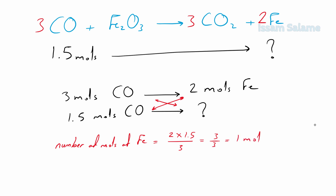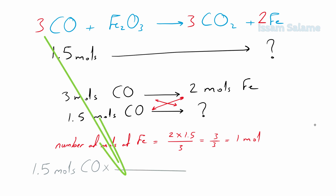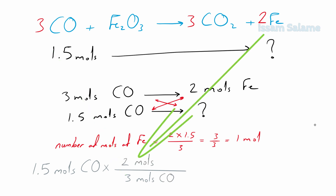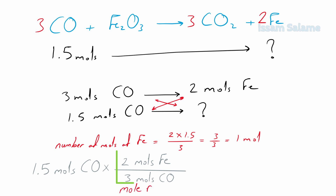The recommended way of solving is by starting with the given — 1.5 moles of carbon monoxide — multiplied by a fraction. In the denominator, put carbon monoxide with its coefficient from the balanced reaction; in the numerator, put the moles of iron with its coefficient from the balanced equation. We multiply 1.5 by this fraction, which is called the mole ratio. This mole ratio is very important and we'll use it in all stoichiometry problems. The answer is 1 mole of iron, cancelling matching units.